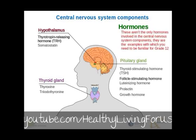These are not the only hormones involved in the central nervous system components of the endocrine system — they're examples, and they're the examples that you need to be familiar with for your grade 12 syllabus, and that's why we're covering them here. They're also among the more important and interesting components.